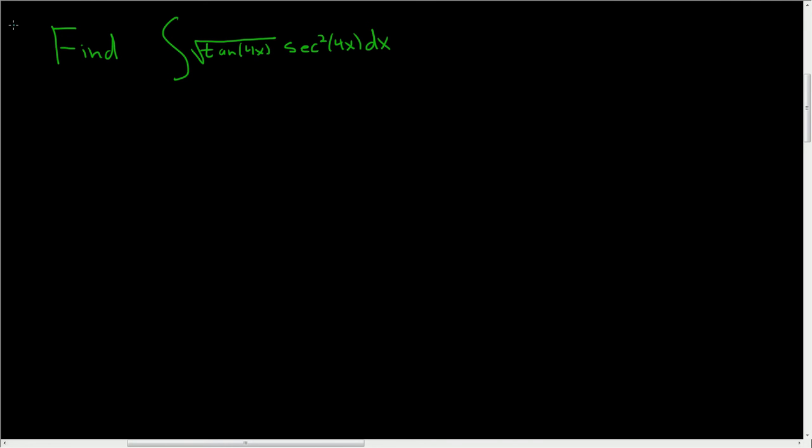We're being asked to integrate, and it appears that u substitution is the way to go. Why? Whenever you have something under a square root, it's a good idea to let that be your u. That's a good first bet. And if you think about tangent, the derivative of tangent is secant squared. So u substitution seems like a very good strategy.